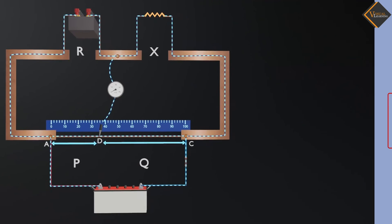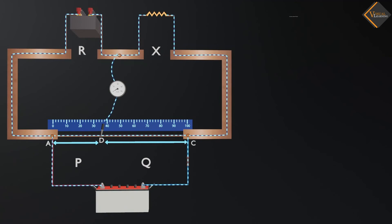Now, applying the Wheatstone bridge principle, according to the resistance P, Q, R, and S, the ratio of resistance P to Q is equal to the ratio of resistance R to S.